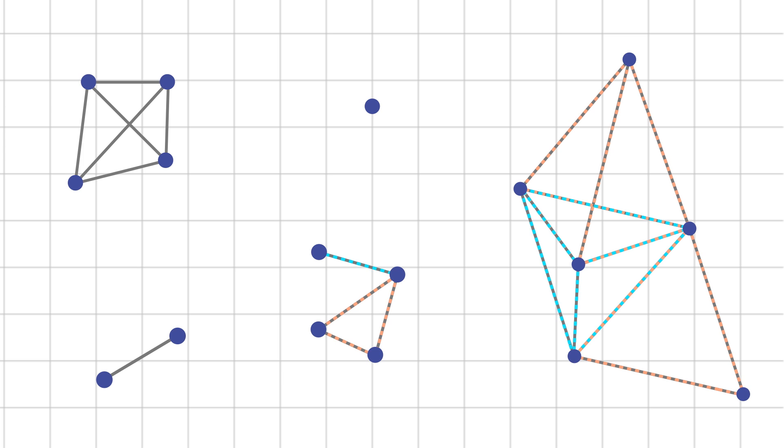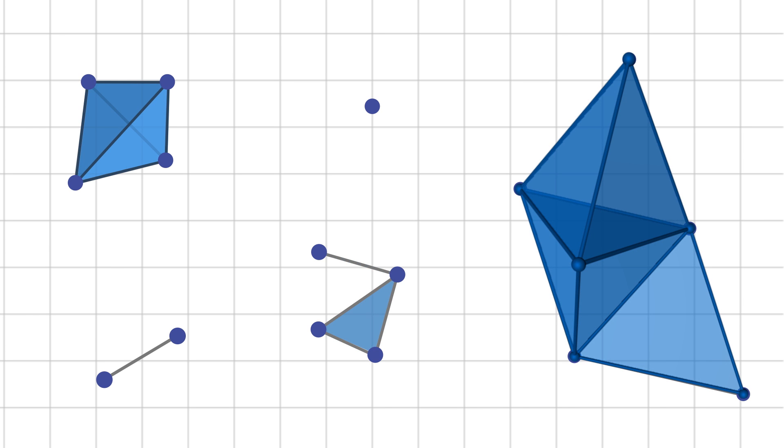Now, to turn this into a simplicial complex, we just convert each complete graph into a simplex by filling it in. When two complete graphs overlap, their representations as simplices will share a vertex or an edge or a face, like these or these.